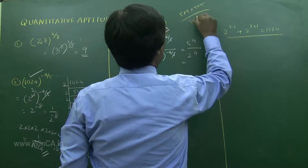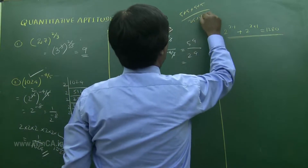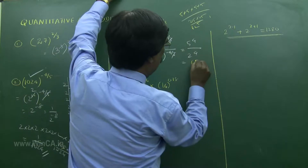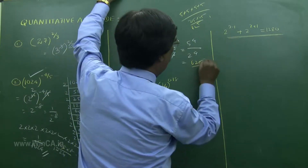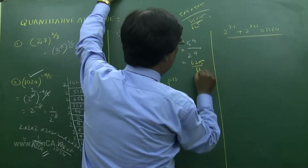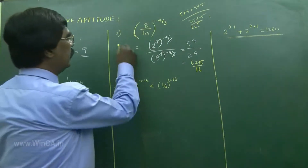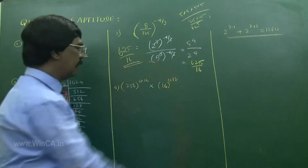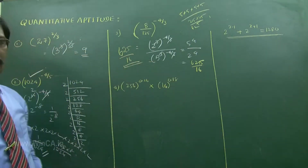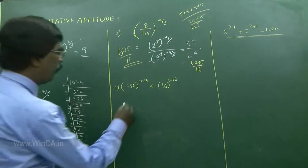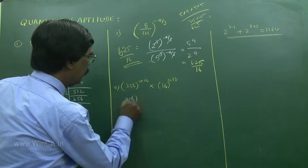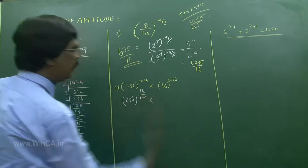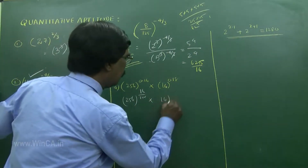25 into 25 is 625. So the answer is 625 divided by 16.